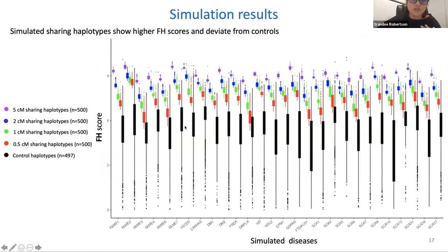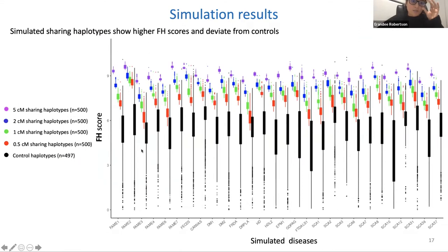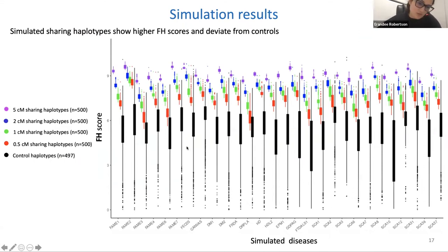Simulation results show that simulated cases have higher HEFTRES score values than controls across all diseases. Our statistic can differentiate cases from controls. Controls do share with disease haplotypes to some extent due to linkage disequilibrium — a portion of the general population could share known disease haplotypes — but this is expected to be minimal. FoundHaplo correctly predicted 90% of simulated samples sharing a region of at least 1 centimorgan and 100% of samples sharing 2 centimorgans or more.